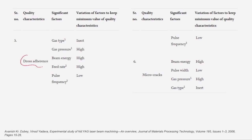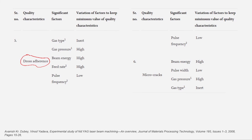Dross forms as deposited material at the entry of the laser-drilled cavity. To avoid dross adherence, inert gas (not oxygen) should be used, with high gas pressure, high beam energy, and high feed rate. Pulse frequency should be low. High gas pressure removes dross at the time of its formation; high beam energy vaporizes material before it can deposit; high feed rate reduces dross residence time on the surface.